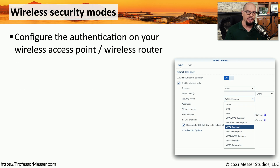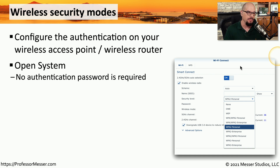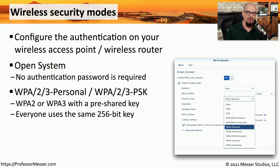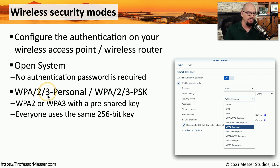The security settings on your wireless access point are very important — we want to be sure we're providing the best security for clients on this wireless network. When connecting at a public access point, you would typically be using an open system: no password is required, but traffic cannot be encrypted. On small or private networks, you might want to use a pre-shared key, or PSK — sometimes referred to as a personal network configuration — commonly used in conjunction with WPA2 or WPA3.